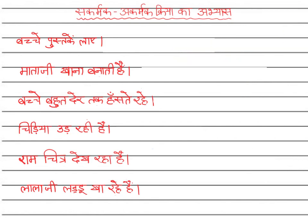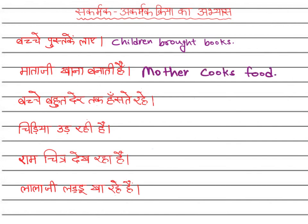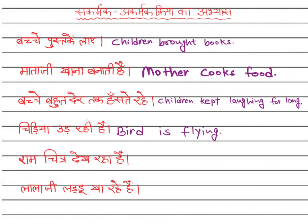We have a few examples here, so I will first read them for you and also translate them in English. Bachche pustke lae — Children brought books. Mata ji khana banaati hai — Mother cooks food. Bachche baut dheer tak haste rahe — Children kept laughing for long. Chidya ud rahi hai — Bird is flying.